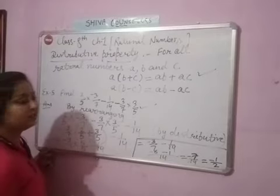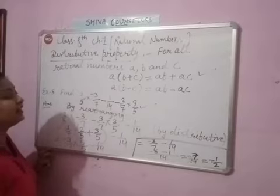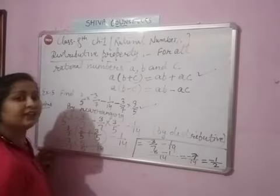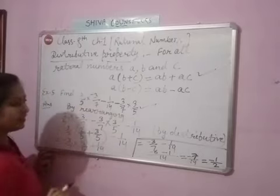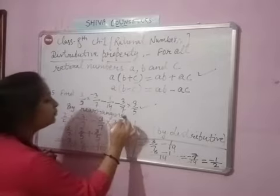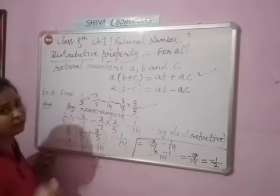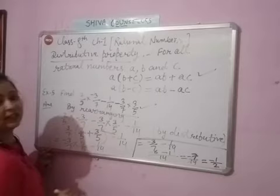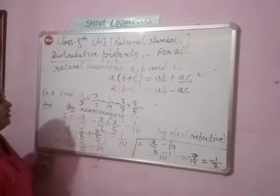We will rearrange this question. We will arrange 2/5 as it is, minus 3/7 as it is, minus 3/7 multiply 3/5 will be together, and minus 1/14 will be separate. Why did we have such a pair? Because this will be ab plus ac or ab minus ac.